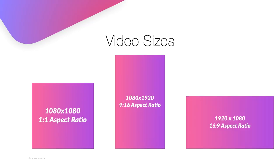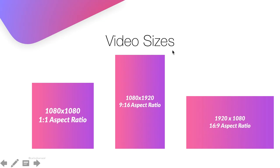Talking about videos, the main video types used for the feed are the square and landscape ones. The square is also the 1:1 aspect ratio, and the horizontal video is 1920x1080 pixels.